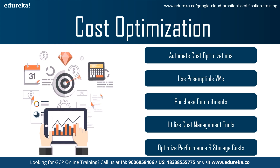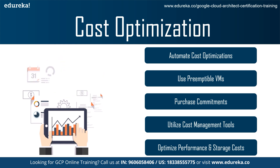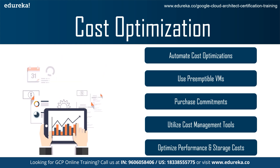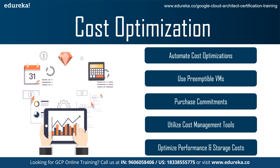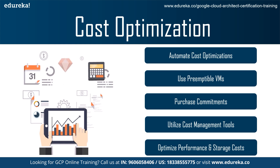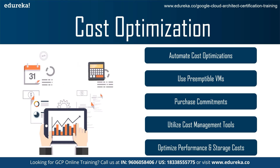The second best practice under cost optimization is using preemptible virtual machines. The biggest reason to use a preemptible virtual machine is cost — preemptible VMs can save up to 80% compared to a normal on-demand virtual machine. This is a huge saving if the workload consists of short-lived processes or things that are not urgent and can be done anytime.